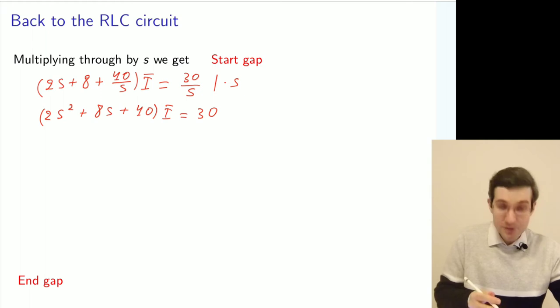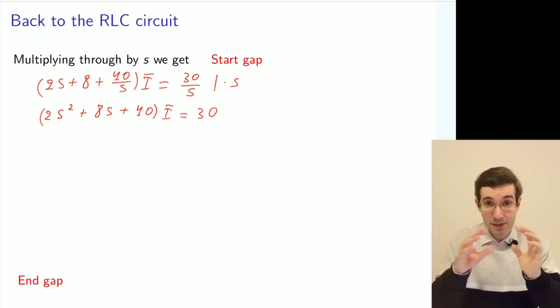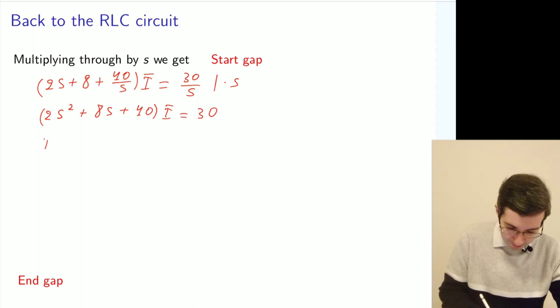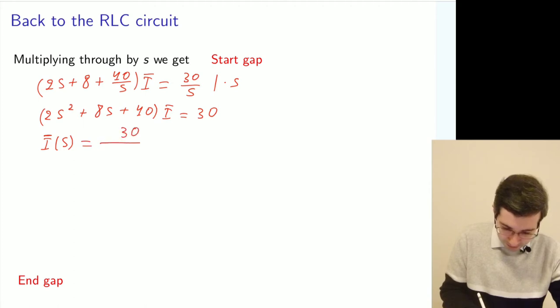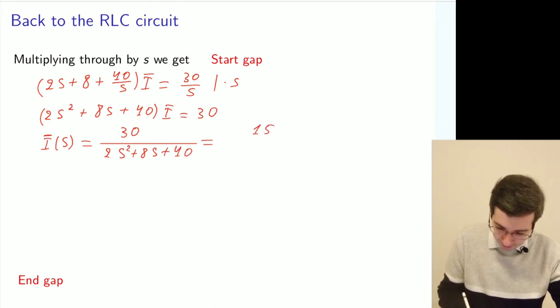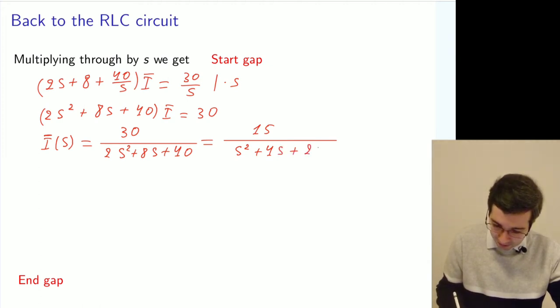Now let's just divide the left and right-hand side by the expression in the brackets. And we have i bar as a function of s equals 30 in the numerator and denominator is 2s² + 8s + 40. Or if we simplify it, it's 15/(s² + 4s + 20).